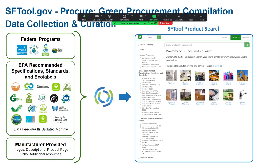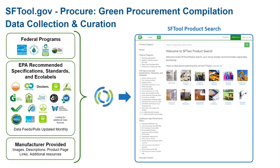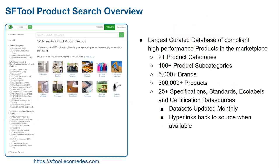We allow manufacturers to help us — not by saying they're green when they're not. They don't get to determine that; the eco-labels do. They get to give us pictures and points of contact so that we create SF Tool product search, which is essentially the largest curated database of compliant, high-performance products in the marketplace.